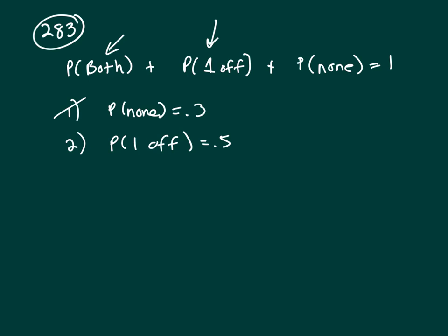So one didn't work independently neither did two so let's put both of them together. You can see it, you could stop right now and say it's the answer. Probability of both plus probability of one offer is point five plus probability of none is point three equals one and you could solve for that. So the answer is C.